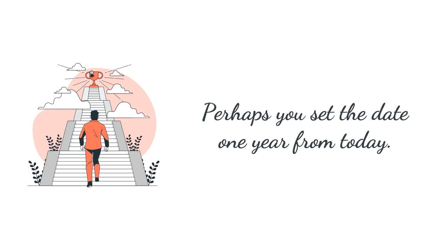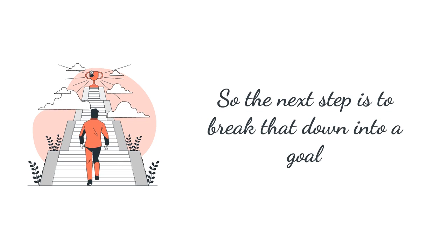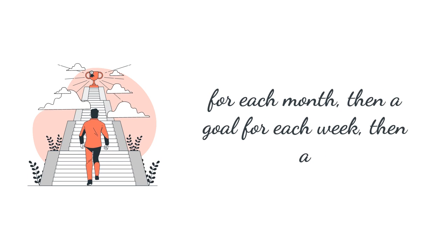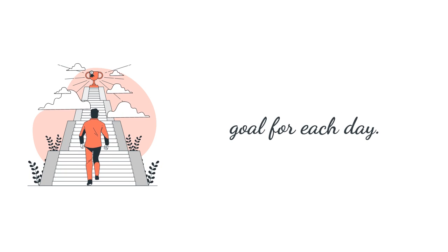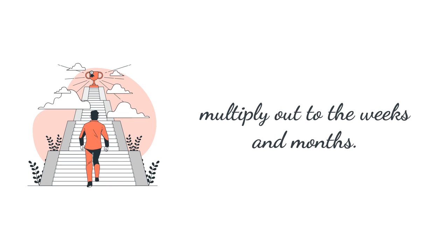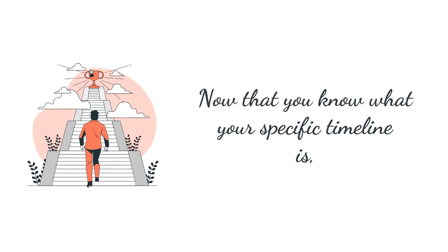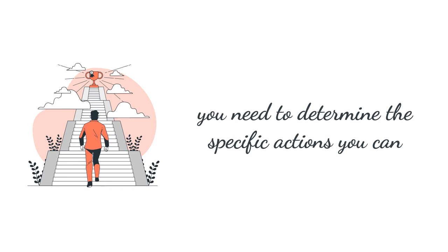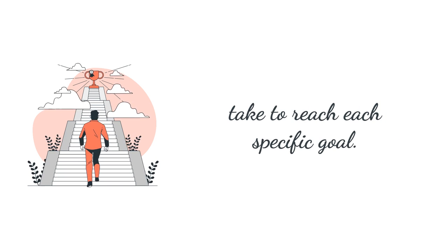Perhaps you set the date one year from today. So the next step is to break that down into a goal for each month, then a goal for each week, then a goal for each day. It may be easier to start with the days and then multiply out to the weeks and months. Now that you know what your specific timeline is, you need to determine the specific actions you can take to reach each specific goal.